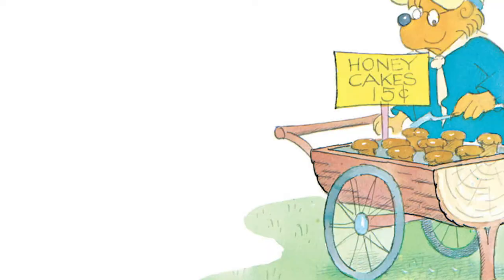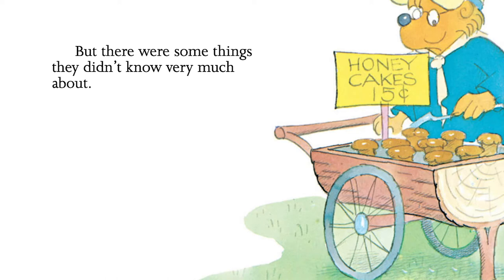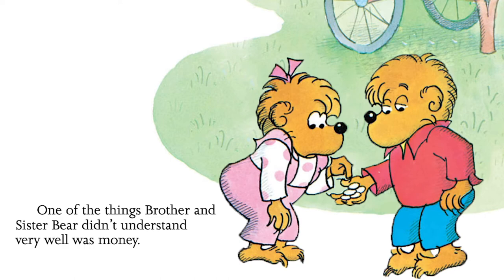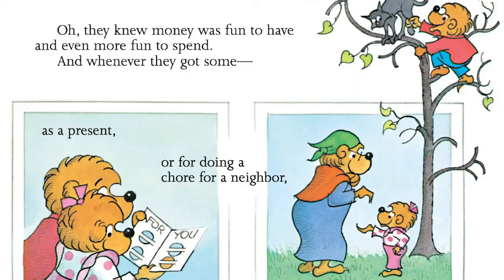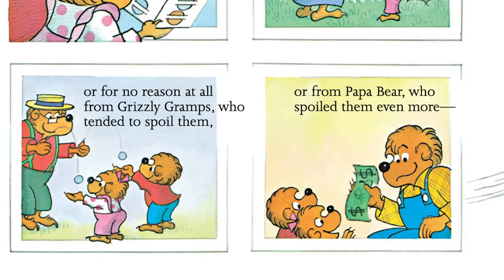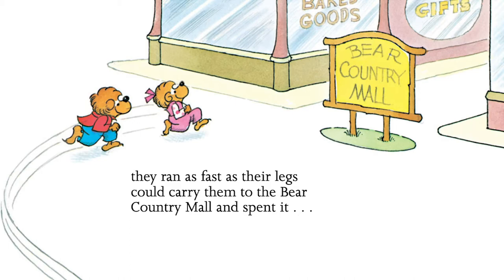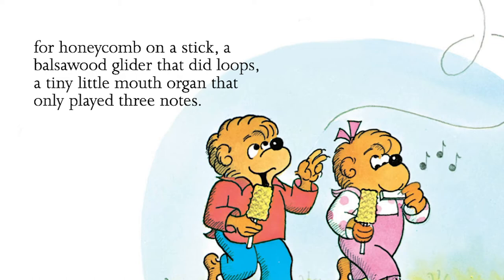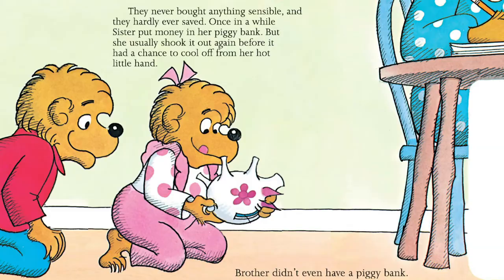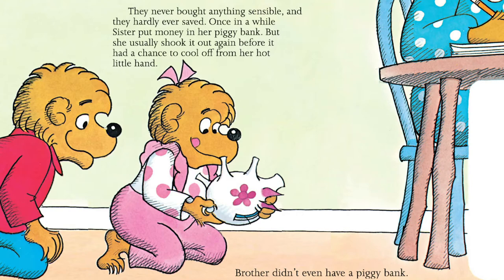But there were some things that they didn't know much about. One of those things Brother and Sister Bear didn't know very well was money. They knew money was fun to have and even more fun to spend. And whenever they got some — as a present, for doing chores for a neighbor, or from Grizzly Gramps who tended to spoil them, or from Papa Bear who spoiled them even more — they ran as fast as their legs could carry them to the Bear Country Mall to spend it. For honeycomb on a stick, a balsa wood glider that did loops, a tiny little mouth organ that only played three notes. They never bought anything sensible and they hardly ever saved. Once in a while, Sister put money in her piggy bank, but she usually shook it out before it had a chance to cool off. Brother didn't even have a piggy bank.